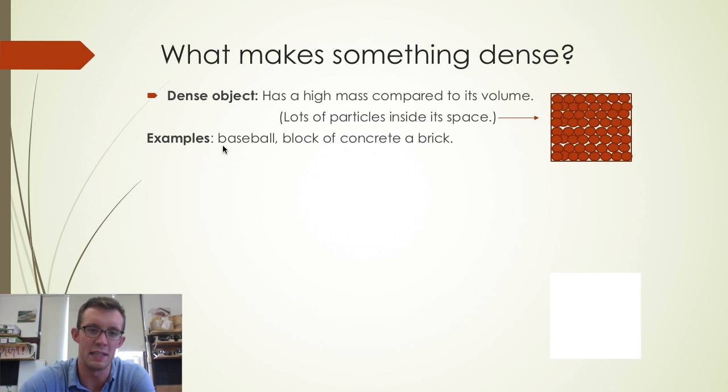Real-world examples of dense objects would be things like baseballs, a block of concrete, or a brick. Whereas non-examples, not dense objects, would be things without a lot of particles in their spaces, like a really fluffy pillow or a bag of cotton balls without a lot of mass in their volume would be not dense.